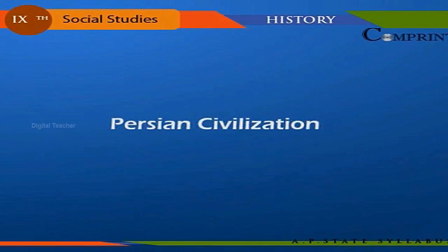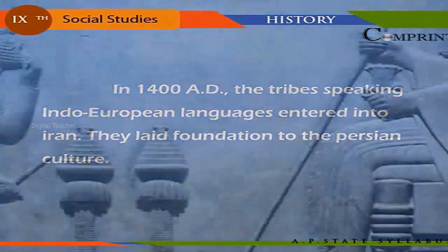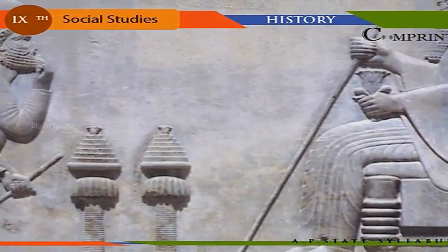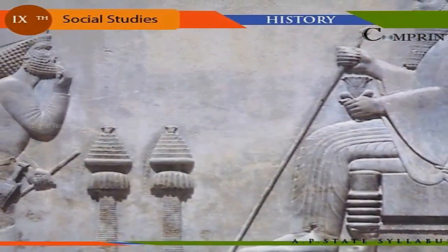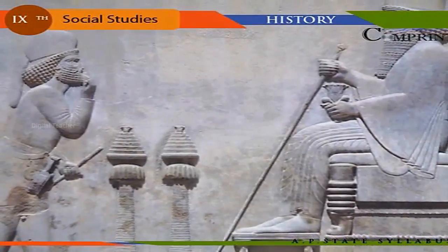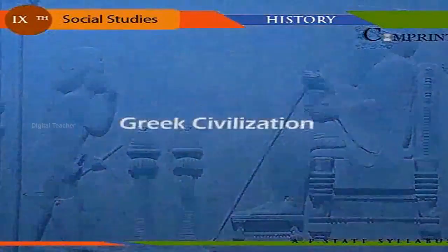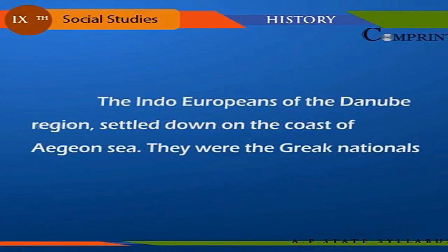Persian Civilization: Around 1400 BC, tribes speaking Indo-European languages entered Iran and laid the foundation of Persian culture. These tribes mixed with local inhabitants, and by the sixth century BC they established the Achaemenid dynasty. The great ruler of this dynasty was Darius I.